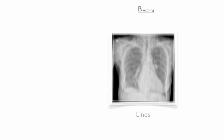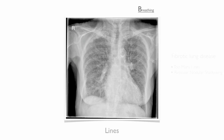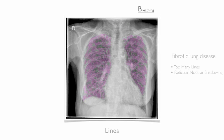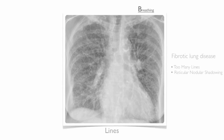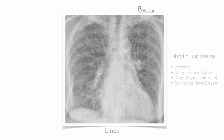Finally, we look at the lung with too many lines. There are two main presentations. In the fibrotic lung, you should look for lines which indicate reticular shadowing. You may also see tiny opacities which indicate nodules. This image shows reticular nodular shadowing. Note there are many causes of fibrotic lung disease, some of which are listed here.